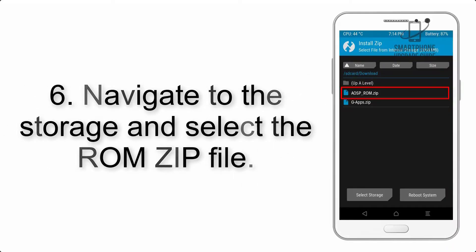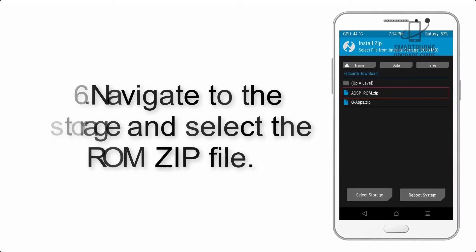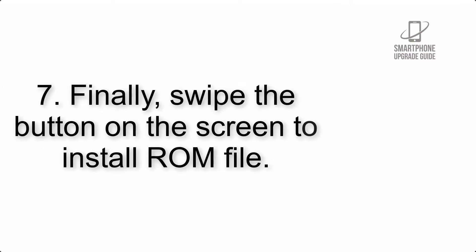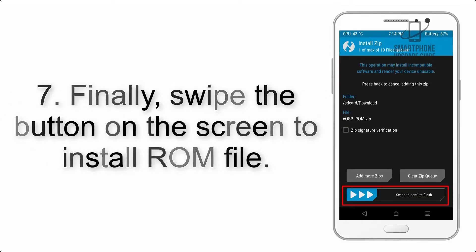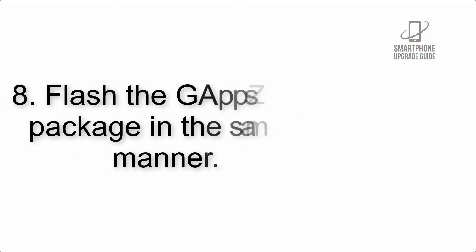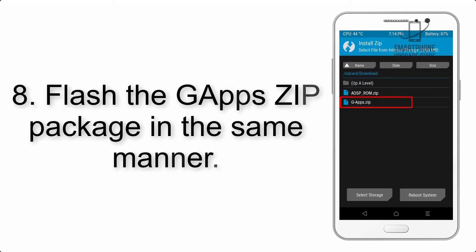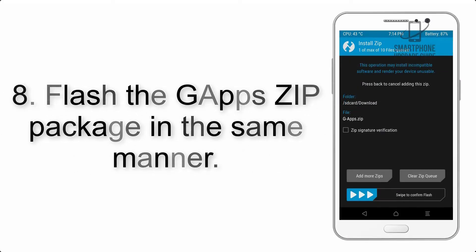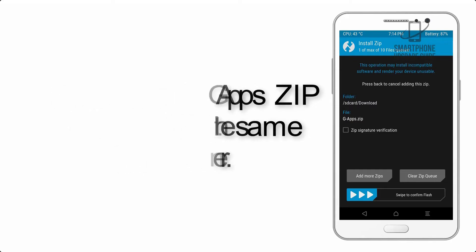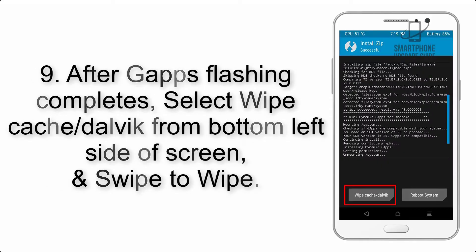Step 6: Navigate to the storage and select the ROM zip file. Step 7: Finally, swipe the button on the screen to install the ROM file. Step 8: Flash the Gapps zip package in the same manner.